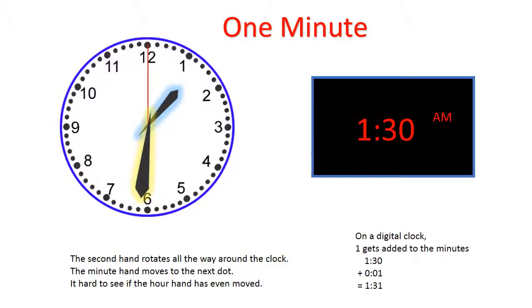On a digital clock, one gets added to the minutes. One hour and 30 minutes plus one minute equals one hour and 31 minutes.